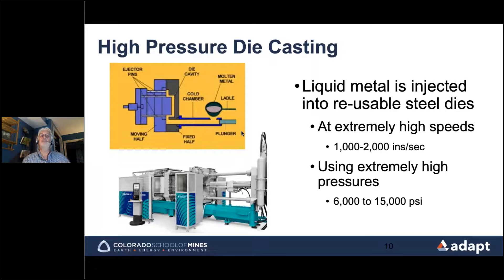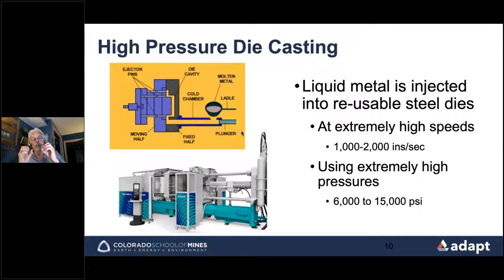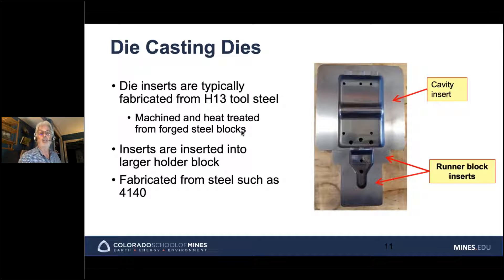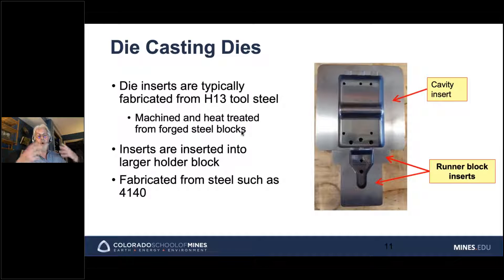Once the cavity is filled, we use extremely high pressures — 6,000 to 15,000 psi — to squeeze the metal, feed more liquid into the cavity to compensate for solidification shrinkage, and shrink down any entrapped gas so that gas pores become very small. Die inserts are traditionally machined from H13 tool steel from forged steel blocks, then heat treated to final shape, and inserted into a larger holding block fabricated from steel such as 4140.